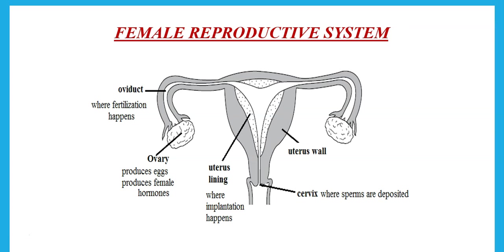If the egg is fertilized, an embryo starts to grow into a fetus. If not, the egg dies and is released out of the body. If the egg is fertilized, it goes down the oviduct into the uterus and attaches to the uterus lining, where implantation happens. The growing fetus attaches to the uterus lining to obtain nutrients from the mother. The cervix is the opening of the uterus and is where sperms are deposited for fertilization.